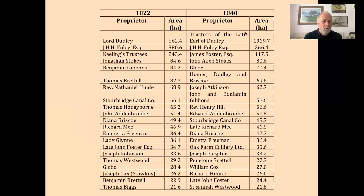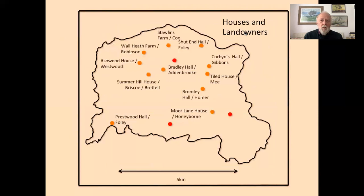Looking at the various large houses in the parish, we can attach names to the families who lived there: Shut End Hall and Prestwood Hall were both occupied by the Foleys; Corbyns Hall by Gibbons; Tildhouse by Mee; Bromley Hall by Homer; and other names including Honeyborn in Moor Lane House, and Adam Brook at Bradley Hall.